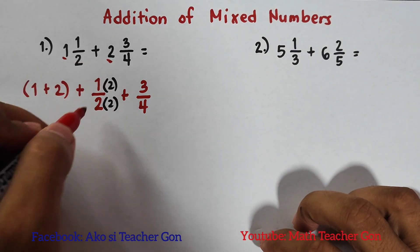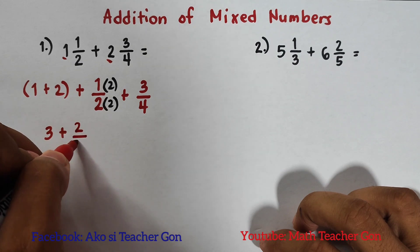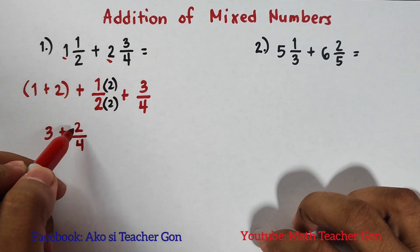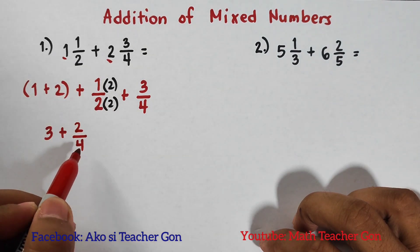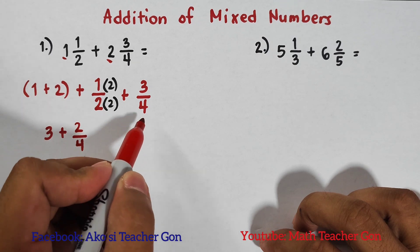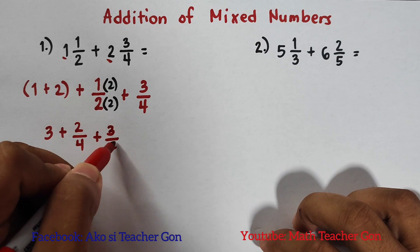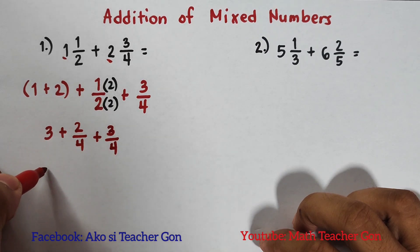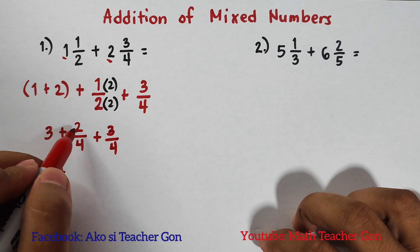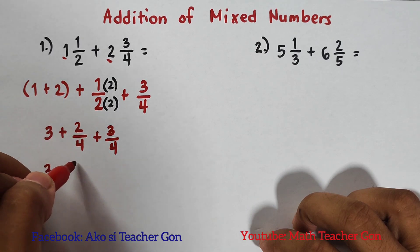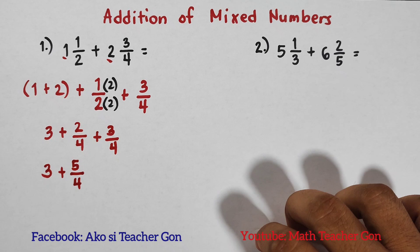So what will happen now is that it will become 2/4, because we have 1 × 2 which is 2, 2 × 2 is 4. And then this one, since it is already 4, we will just copy plus ¾. Copy your whole number 3, plus add this: 2 + 3 which is 5/4.